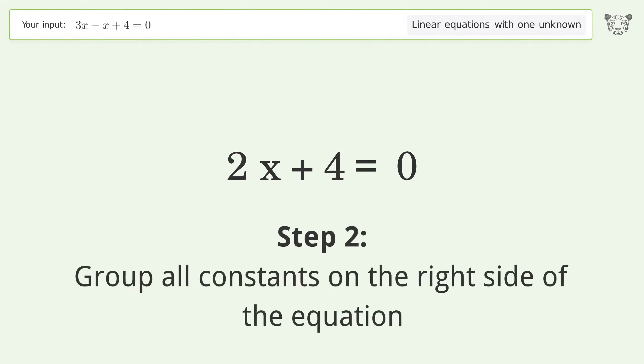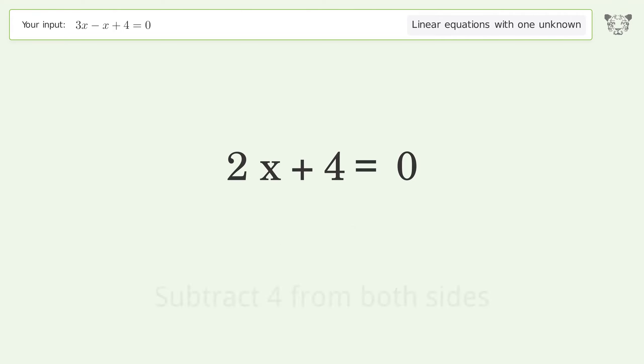Step 2: Group all constants on the right side of the equation. Subtract 4 from both sides. Simplify the arithmetic.